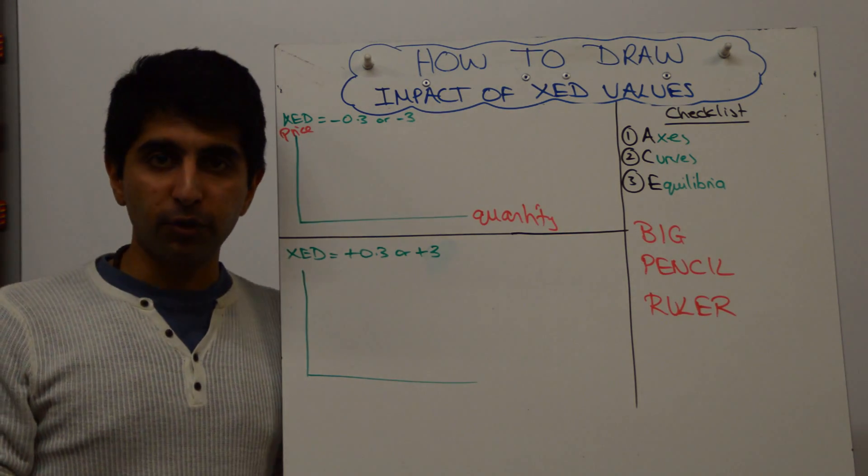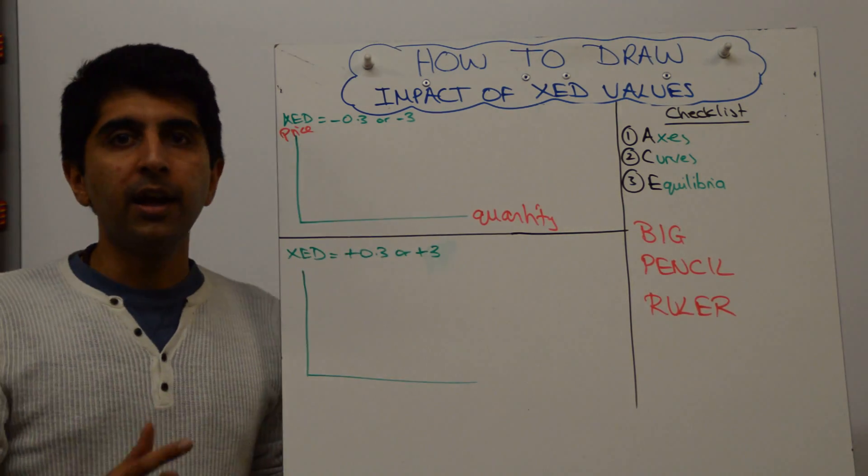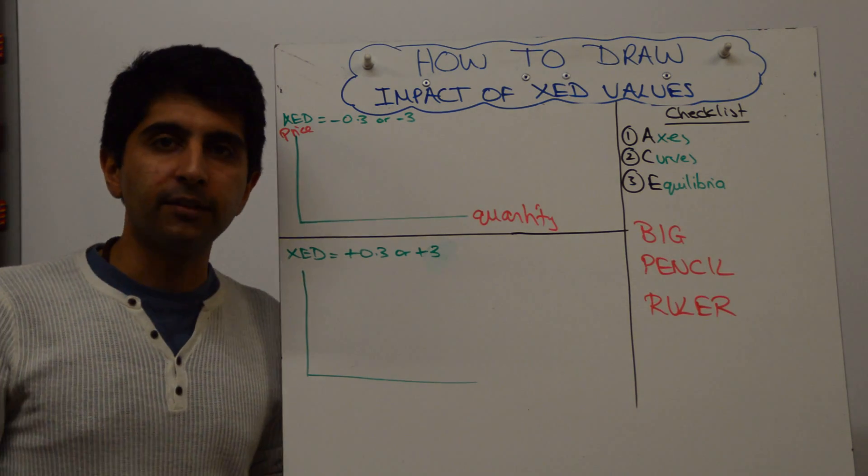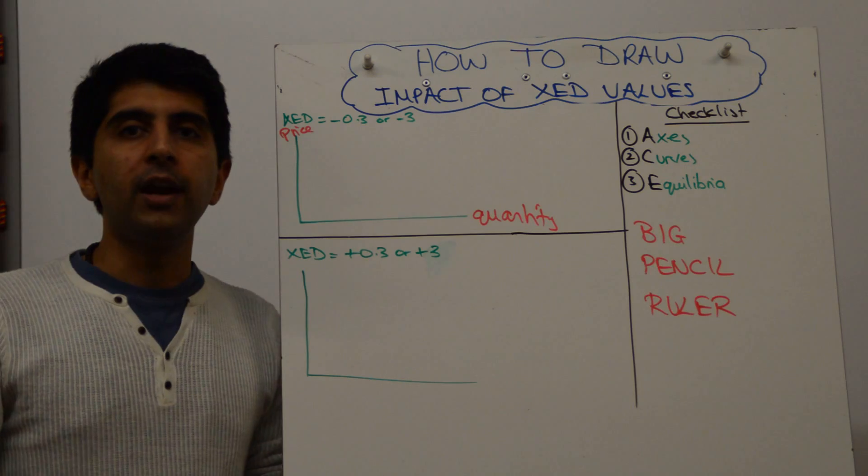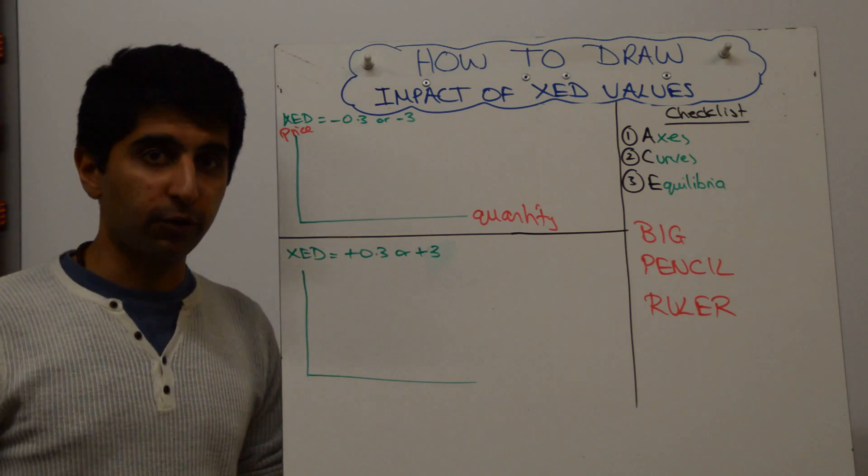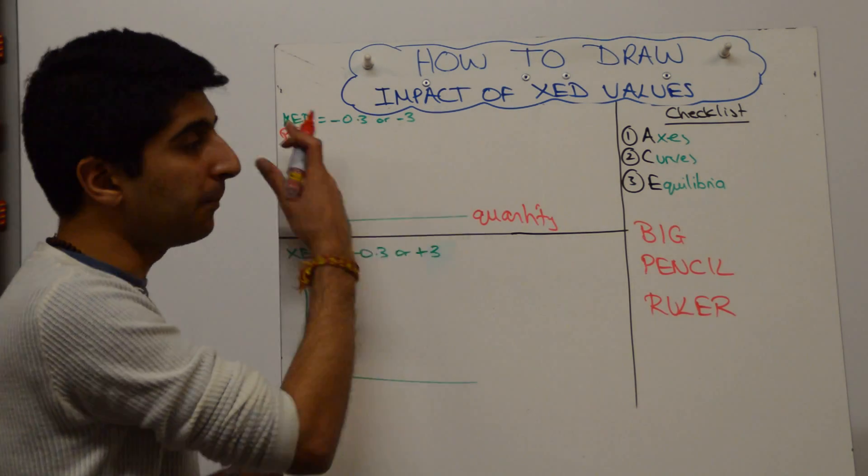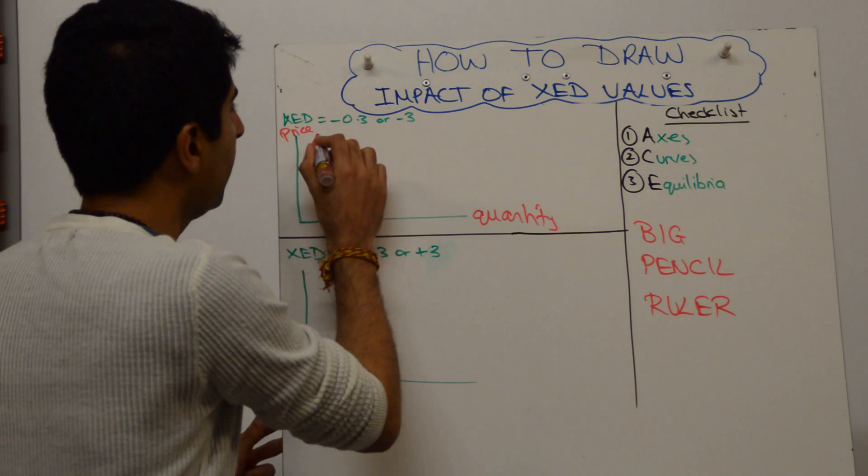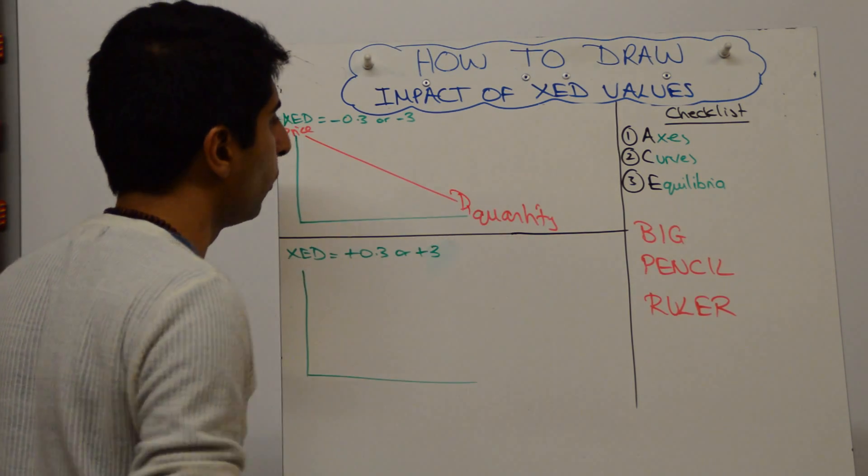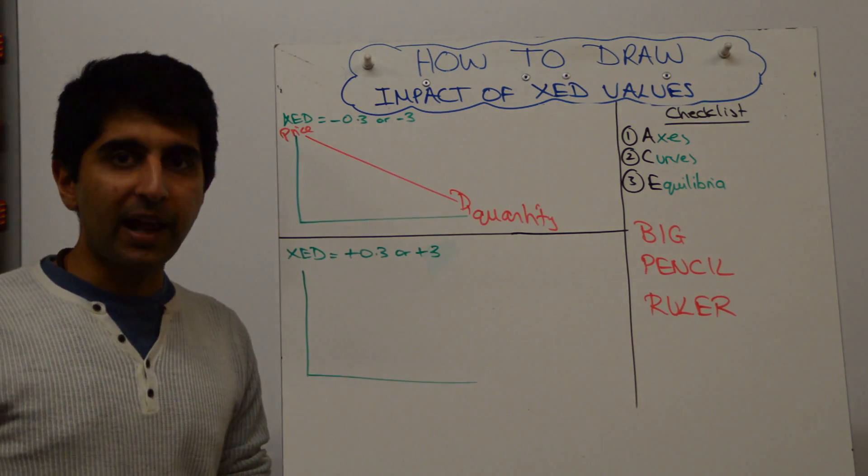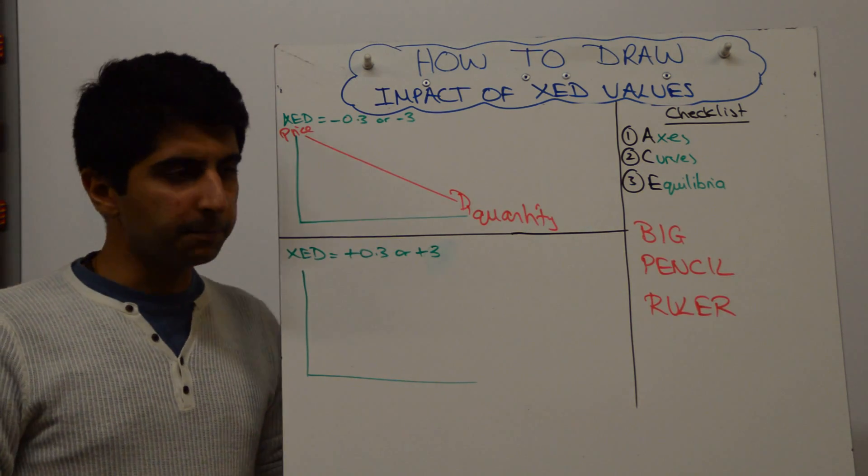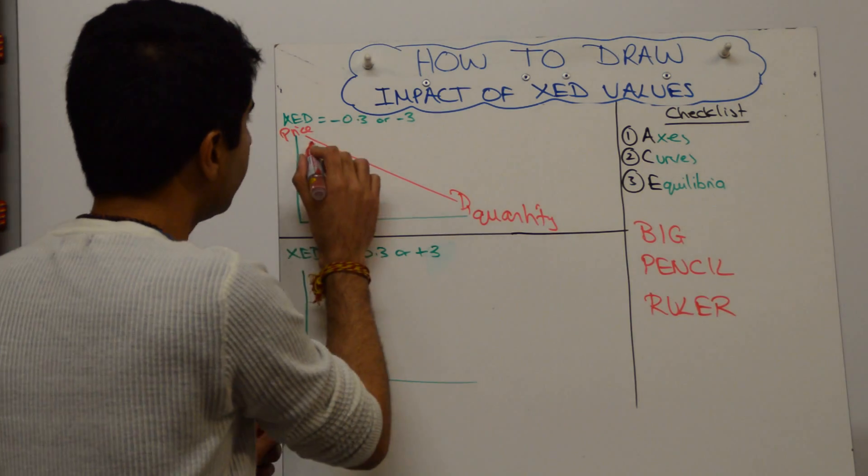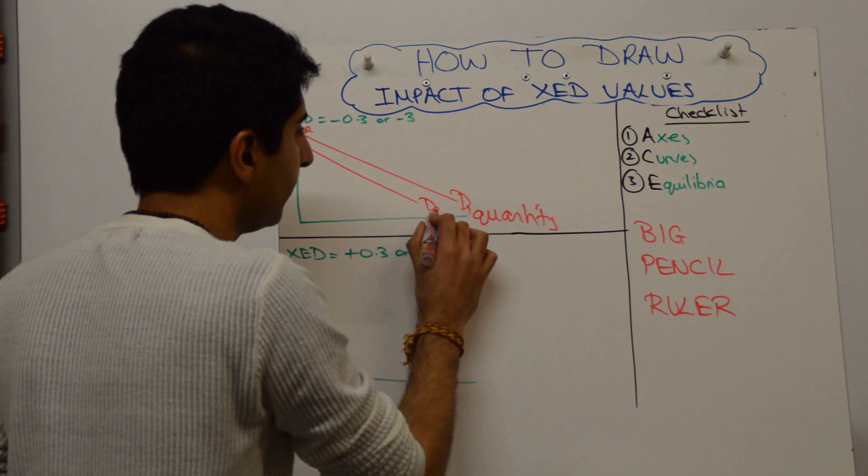If the XED between Nespresso machines and Nespresso capsules is minus 0.3, then a 10% increase in the price of Nespresso machines is going to lead to a 3% fall in the quantity demanded of Nespresso capsules. So this is the market for Nespresso capsules. We have an initial demand here, I'll call it D1. Demand is going to shift to the left, that's a given if there's a price rise. But because the XED relationship is minus 0.3, the shift is going to be relatively small. So let's call that D2.